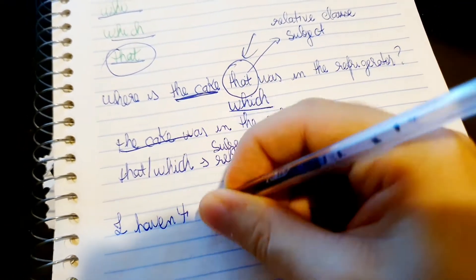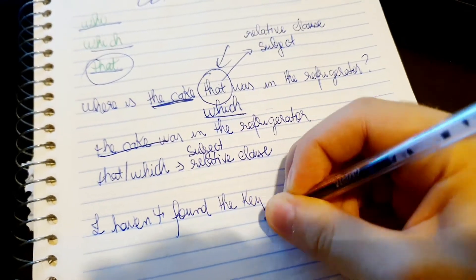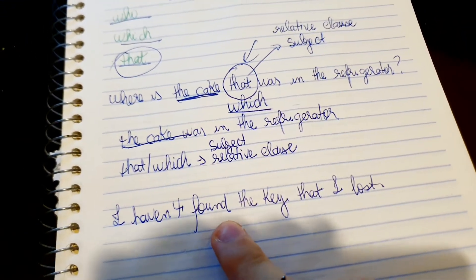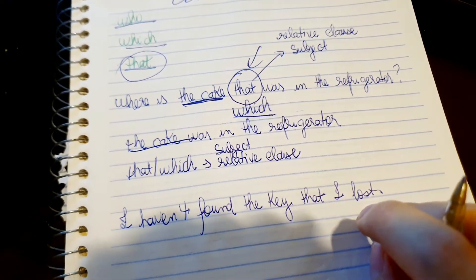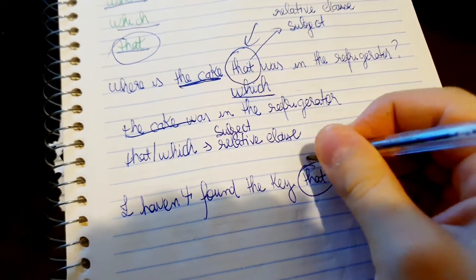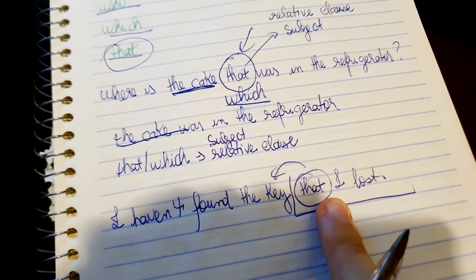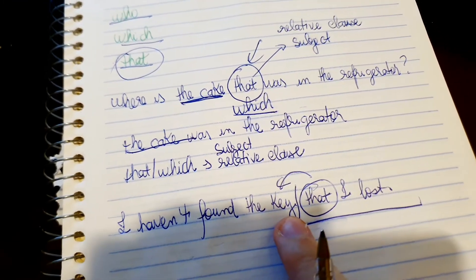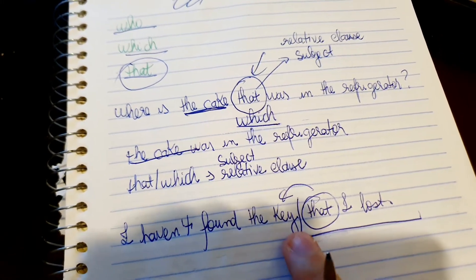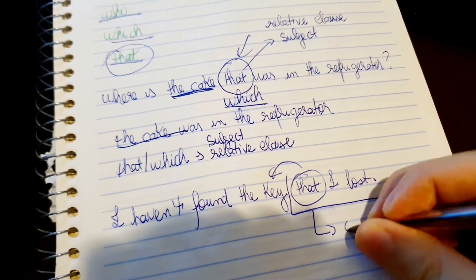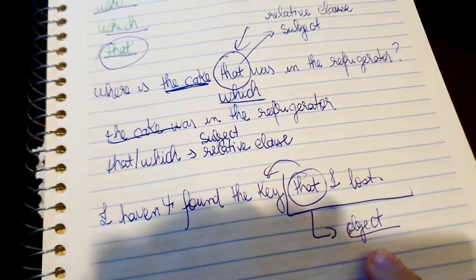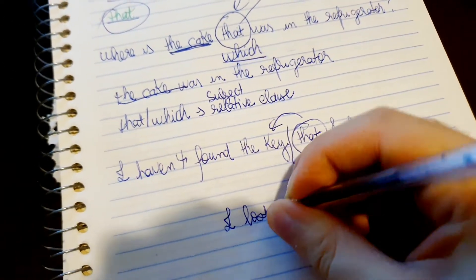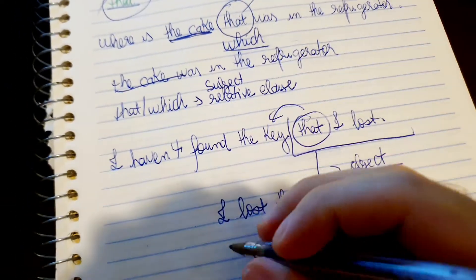In some cases the relative clause can also work as an object. For example: "I haven't found the key that I lost." I lost my key and I don't know where I put it. 'That I lost' is the relative clause, and 'that' here is the object — the key is the thing I lost.